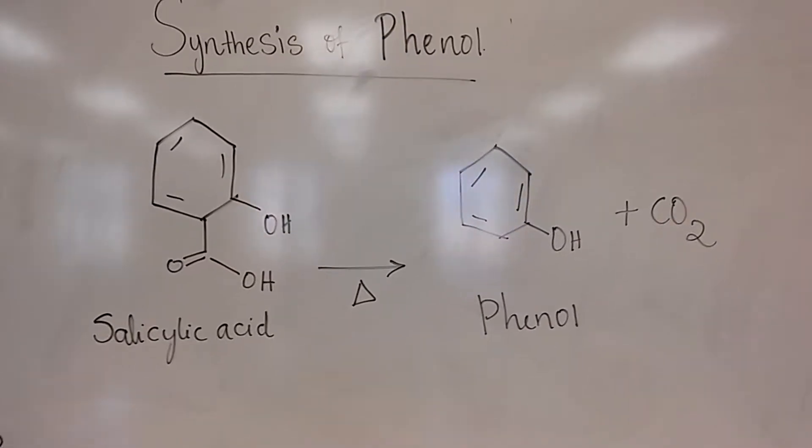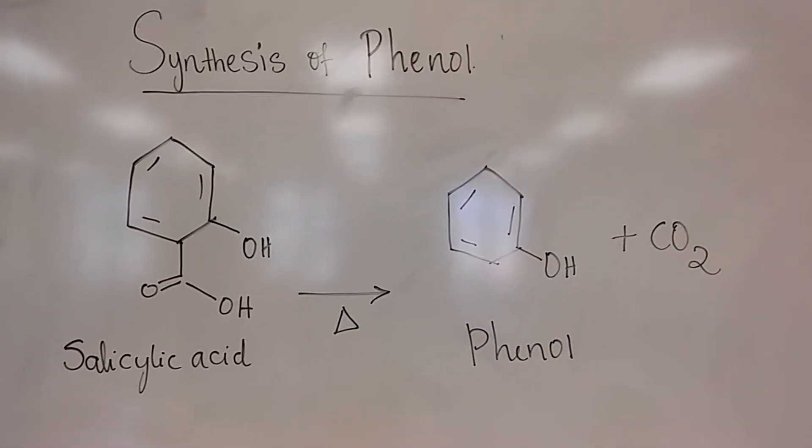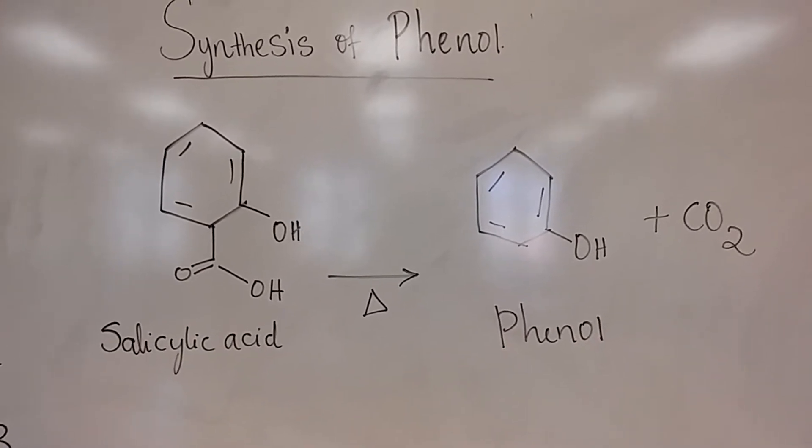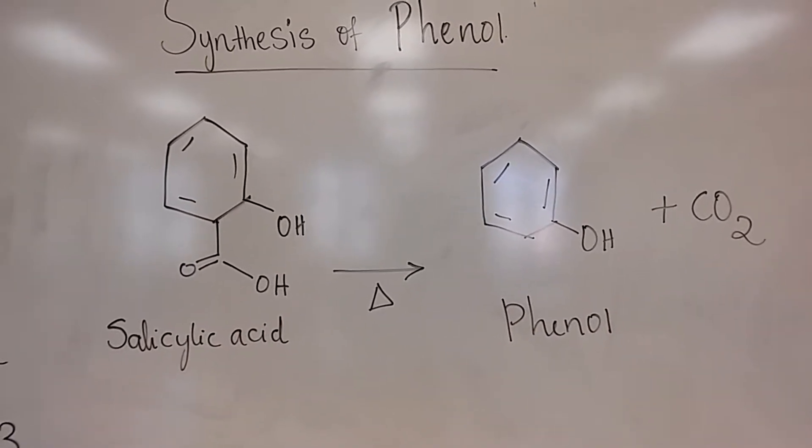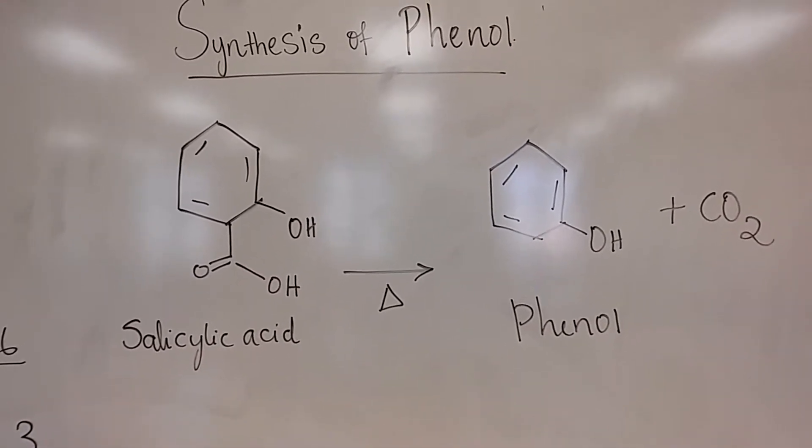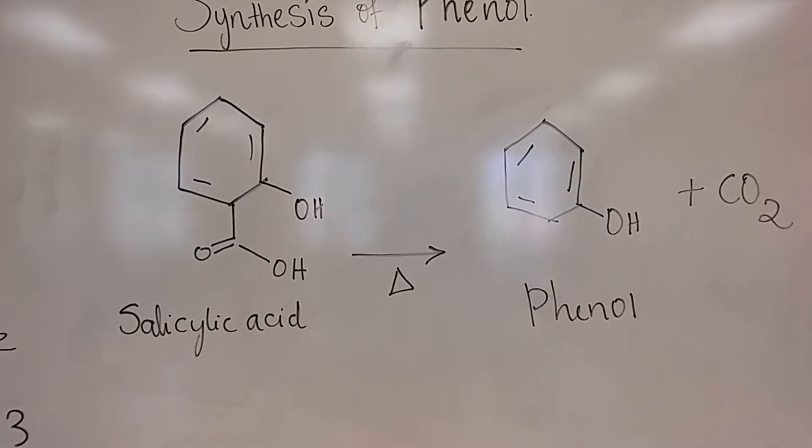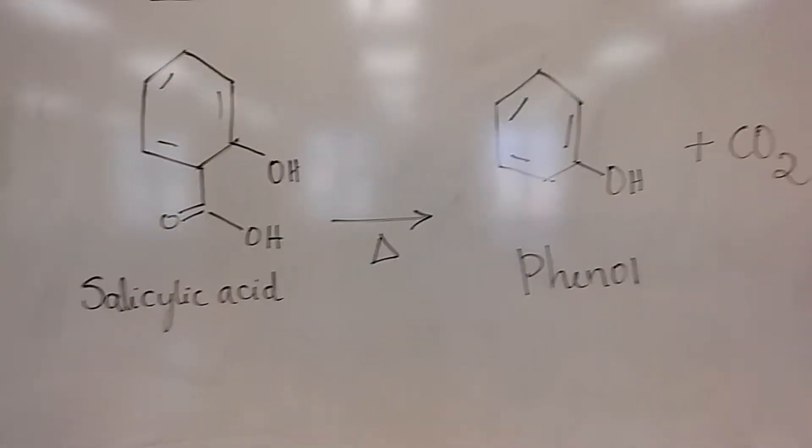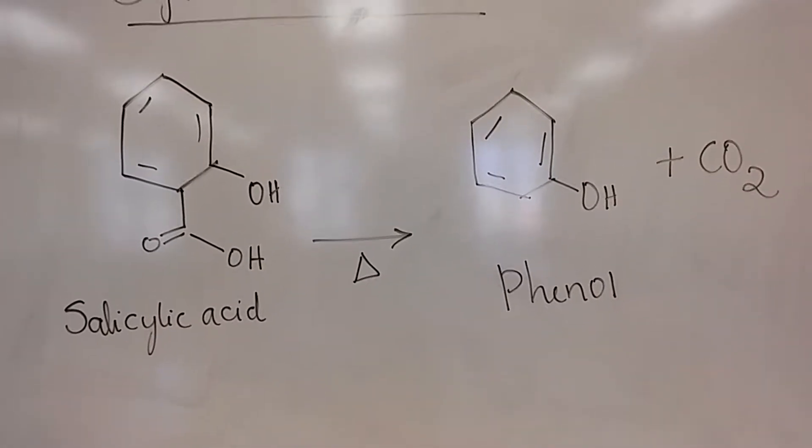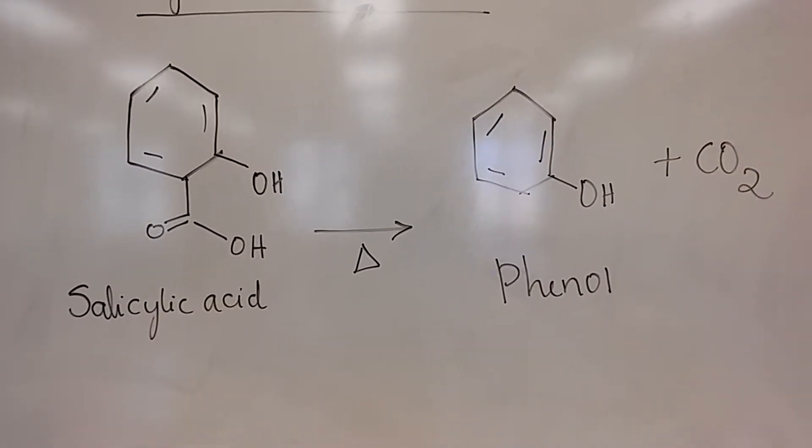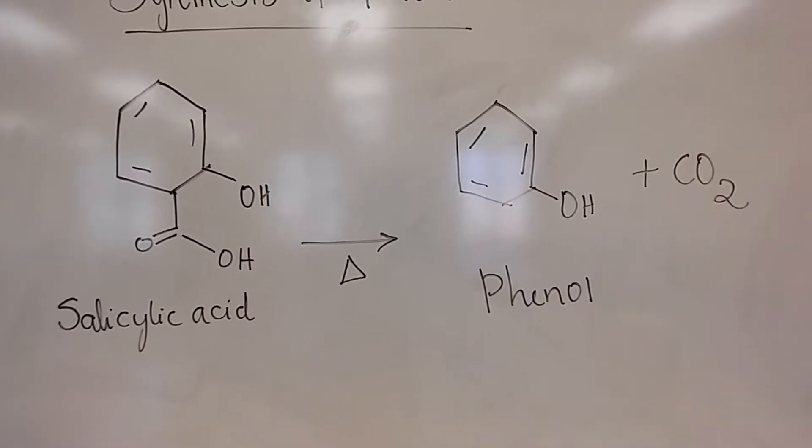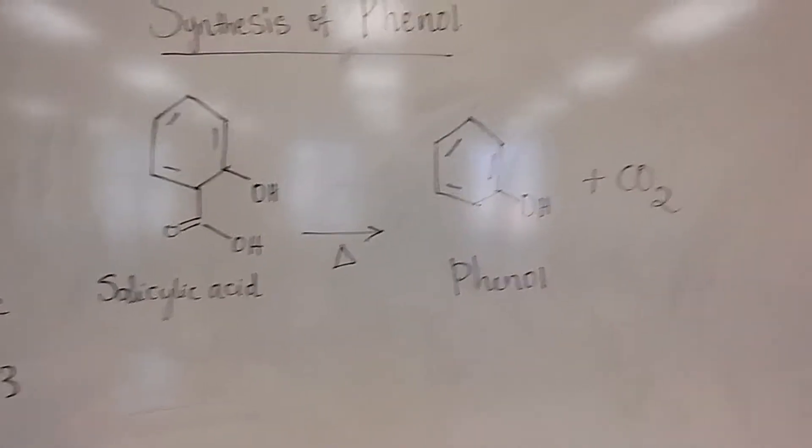We're back. As I pointed out, we'll be synthesizing phenol from salicylic acid. As you can see, salicylic acid contains both the acid group on the bottom and the alcohol group on the top. As you heat it at about 181 degrees Celsius, which is the boiling point of salicylic acid, the CO2 will be gone at that time and you'll be able to distillate phenol. So we're doing a simple distillation with heating, going from salicylic acid to phenol, and the byproduct is CO2.